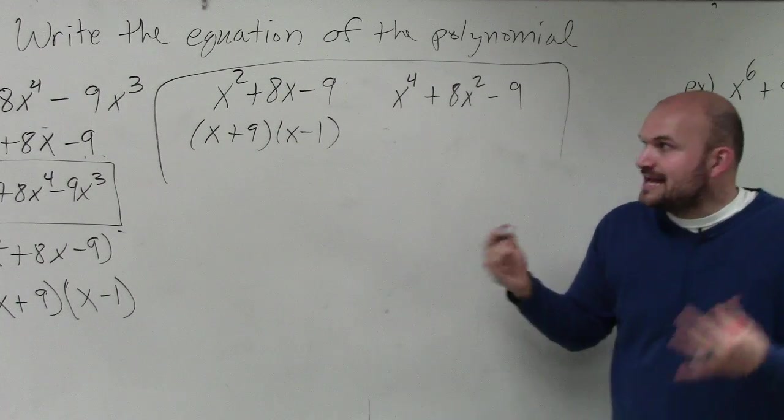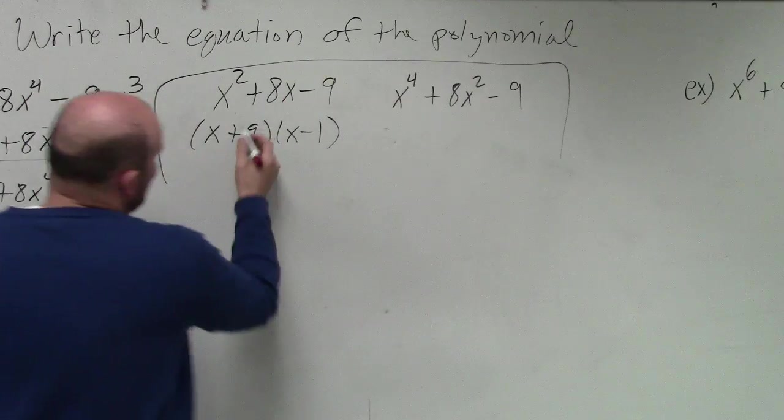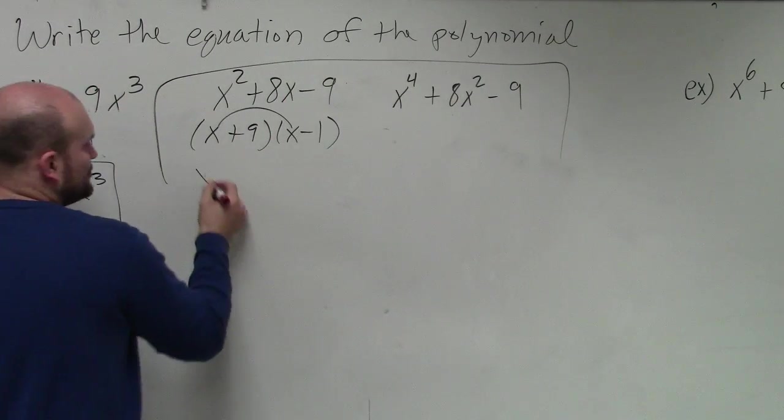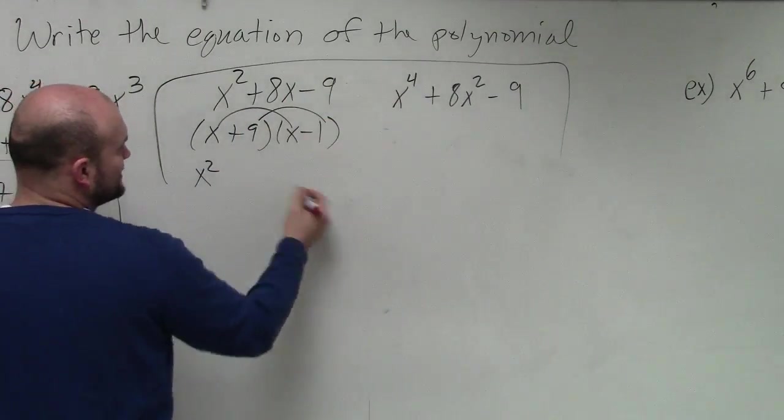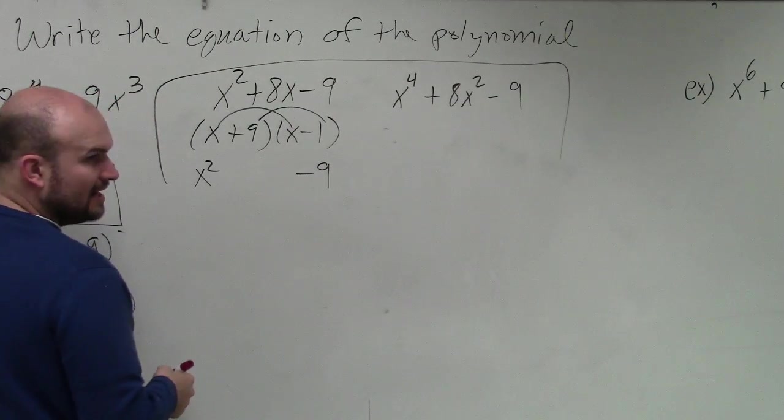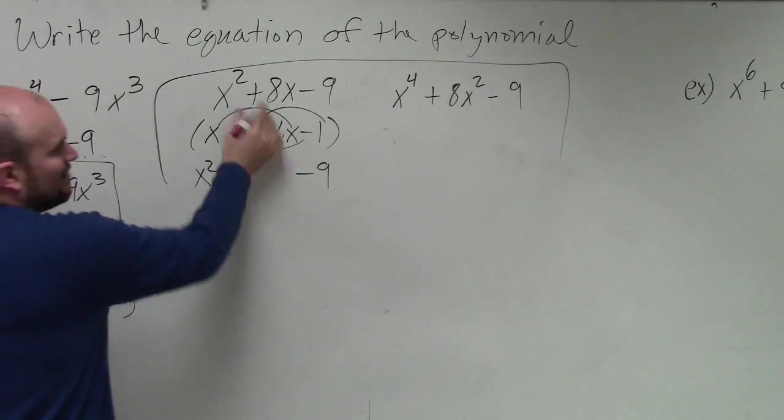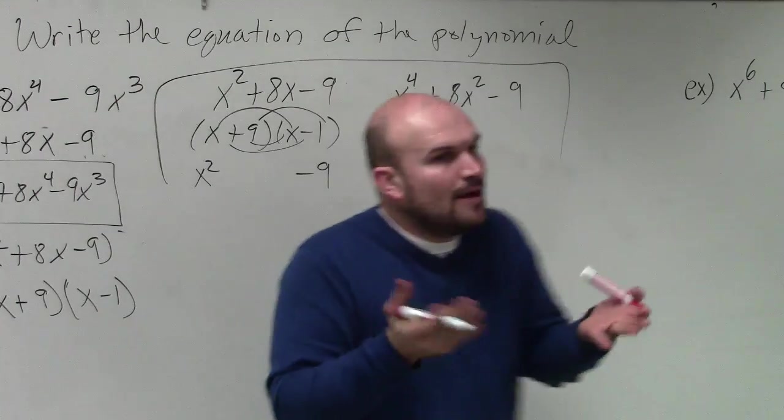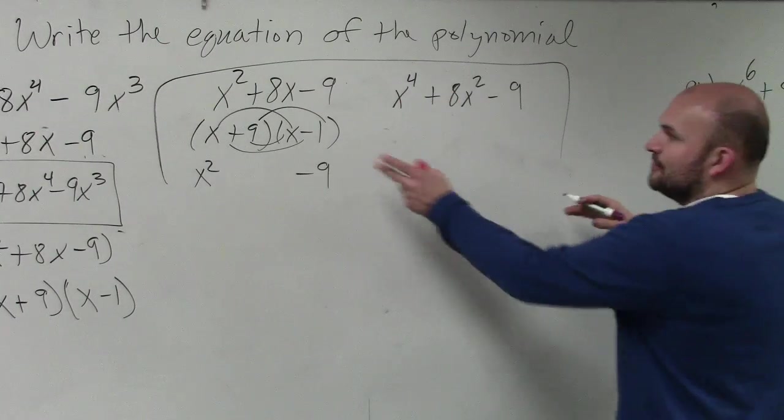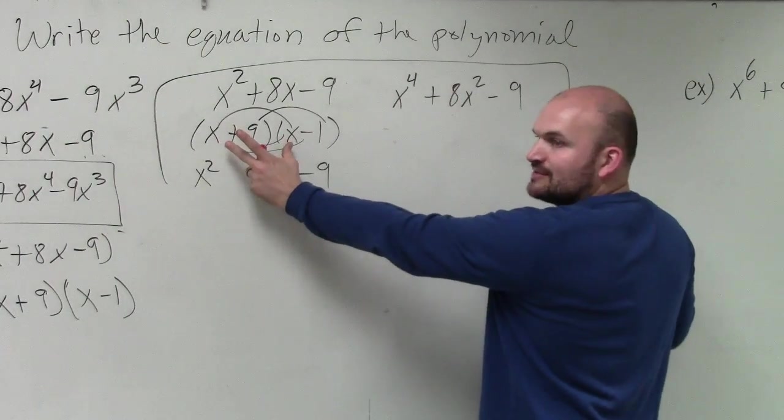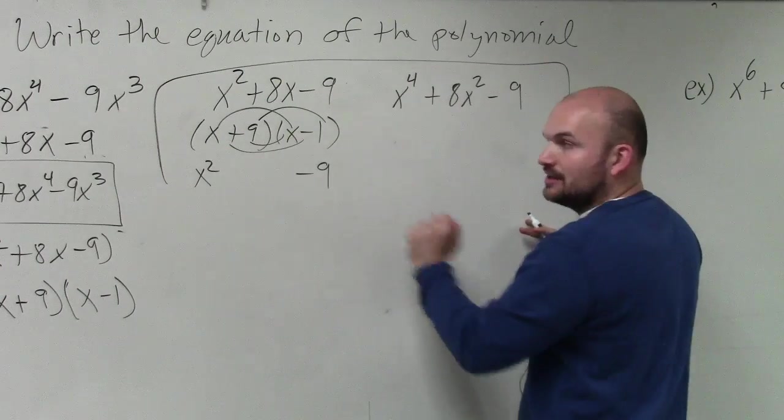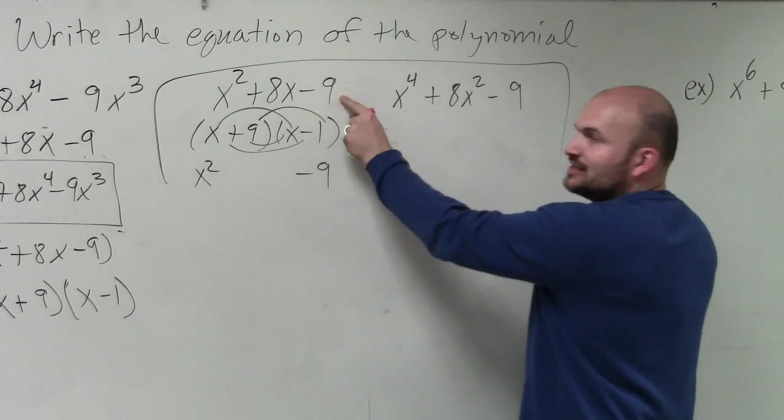Now, but what I want you guys to understand is when we apply FOIL, you multiply the first two terms, you get x squared. When you multiply the last two terms, you get negative 9, right? The middle terms are what combine to give us 8x. So what I want you guys to understand is the first two terms of the factor give us x squared. The last two terms of our factors give us negative 9.